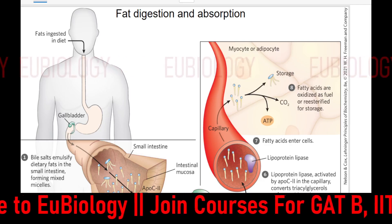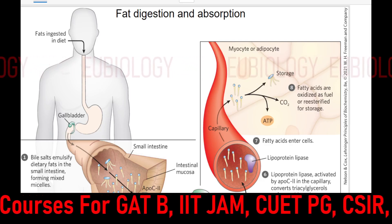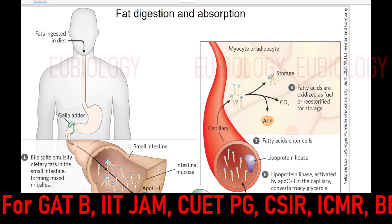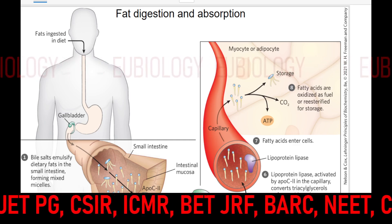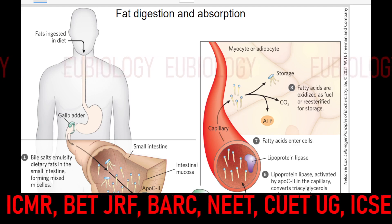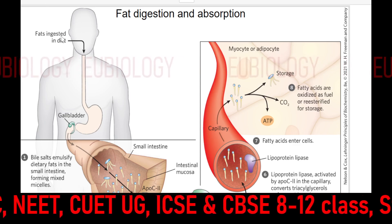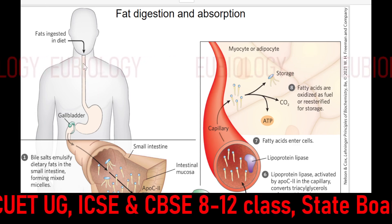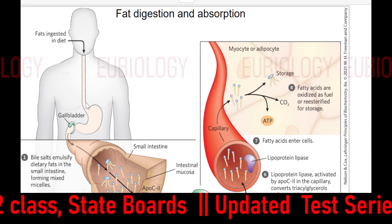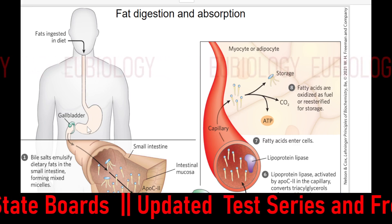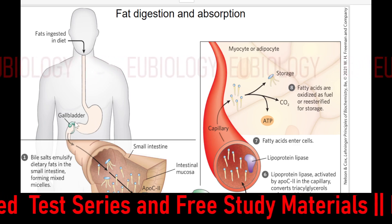Hello everyone, I am Bangaj Kumar and today we will see fat digestion and their absorption. As you know, fat is an insoluble particle of food matter, so how can we make it solubilized? Whenever you eat any oily substance, you are eating fat. Fat will go through the mouth, then esophagus and then stomach. Till the stomach, there will be no proper digestion of the fat.